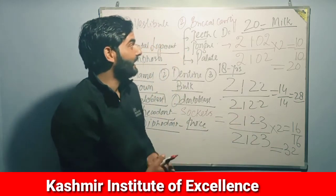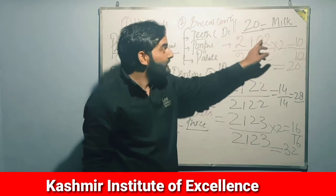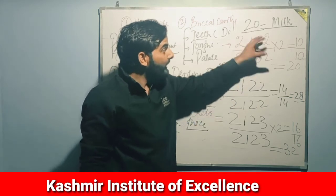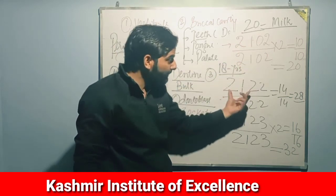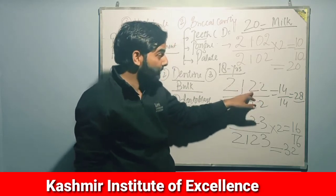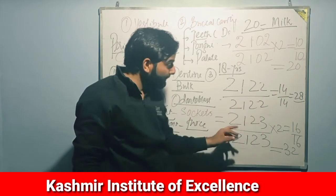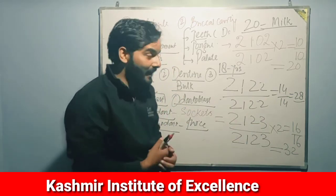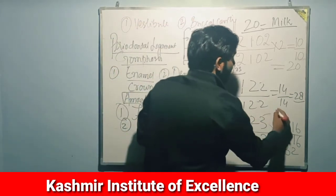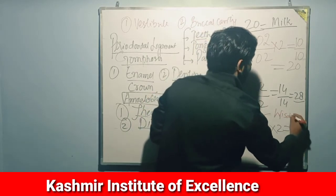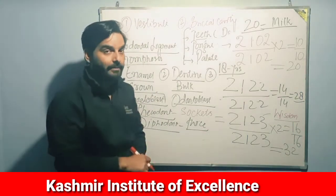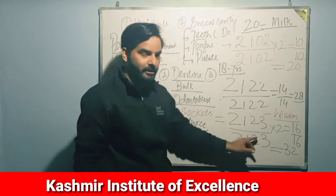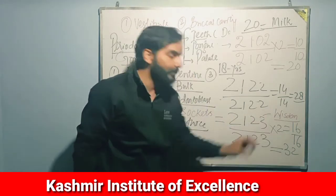To summarize the dental formulas: up to age 6, formula 2, 1, 0, 2 / 2, 1, 0, 2 gives 20 teeth. Up to age 18, formula 2, 1, 2, 2 / 2, 1, 2, 2 gives 28 teeth. The adult formula after 18 is 2, 1, 2, 3 / 2, 1, 2, 3 giving 32 teeth. The extra teeth appearing at age 18 are the third molars, called wisdom teeth.